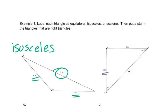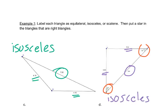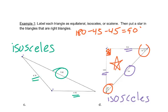This triangle has 5.94, 5.94, and 8.4, so it's also isosceles. Let's look at the angle measurements in this triangle. Here we have 45 and here we have 45. Remember the angles inside a triangle have to add up to 180. So if I take 180 minus 45 minus 45, I get 90. So this angle, angle A, needs to be a right angle. That means because there's one right angle here, this is a right triangle and we'll put a star inside of it.